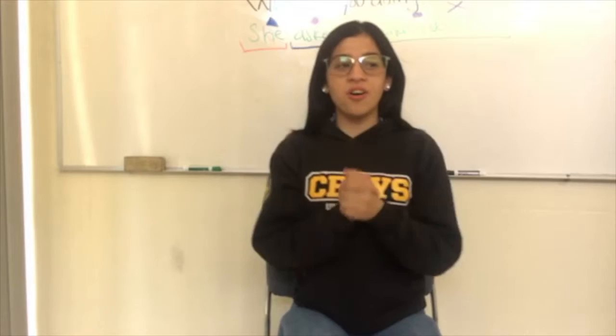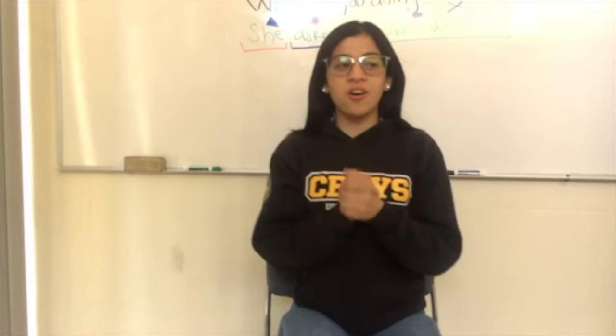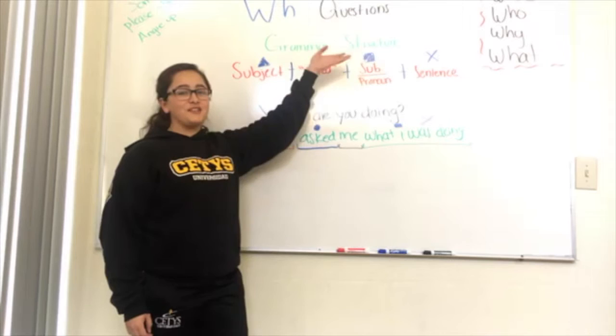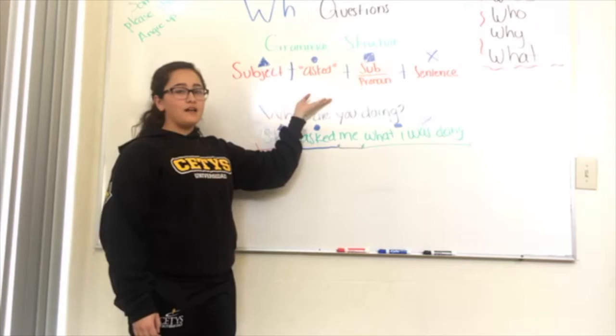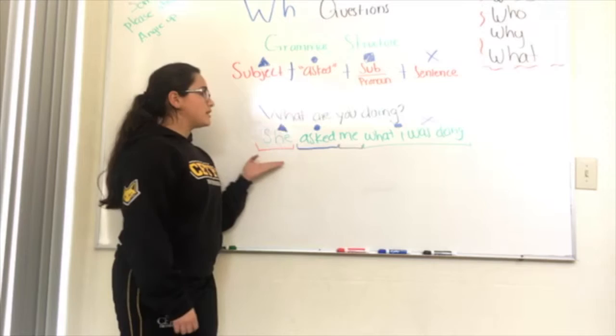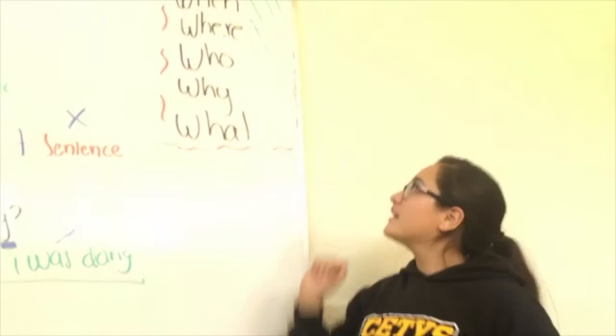My friend Fernanda is going to present the questions with WH words. There are two types of reported questions. I'm going to explain the WH questions. The grammar structure is: subject, the verb 'ask', subject pronoun, and the whole sentence. Here's an example: the question 'What are you doing?' becomes 'She asked me what I was doing.' WH questions use words like when, where, who, why, and what.